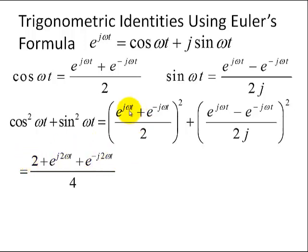Where does this 2 come from? Well, when you square this, we see that we got e to the j omega t multiplied by e to the minus j omega t is 1, and that's going to happen twice. So, 1 plus 1 is 2, and that's why we have the 2 here. And squaring the denominator of 2, we get 4.